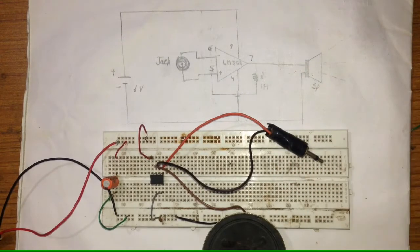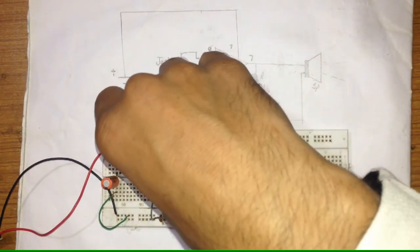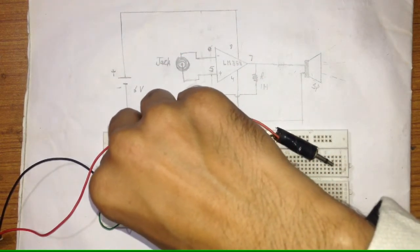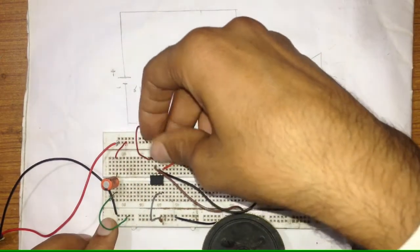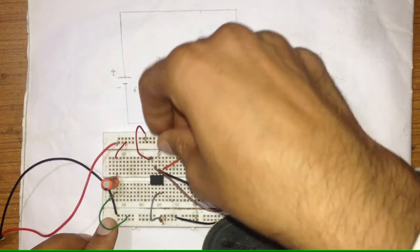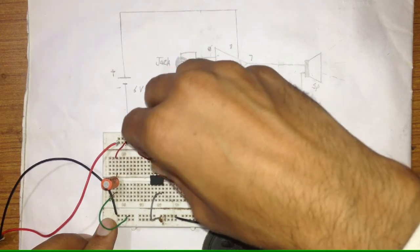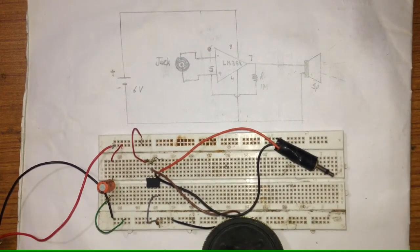Now connect the one ohm resistor and speaker to pin 5. That is, the speaker and the one ohm resistor to pin 5. Here, now connect the device.